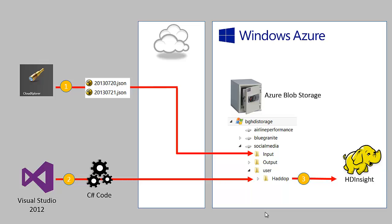When that job runs, HD Insight will go into the Blob Storage and pull the code out so that it can be distributed to the Hadoop nodes. As the nodes run the code, they will pull the data from the input folder. That's one of the advantages of running this in the cloud - we can build up our HD Insight cluster and tear it down and it doesn't affect our data storage at all. None of this data is stored permanently on the HD Insight VMs themselves, so we can build those VMs up and expand them and then take them all down without affecting our persistent data.